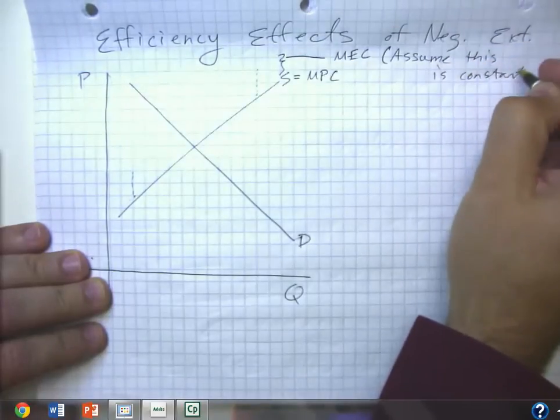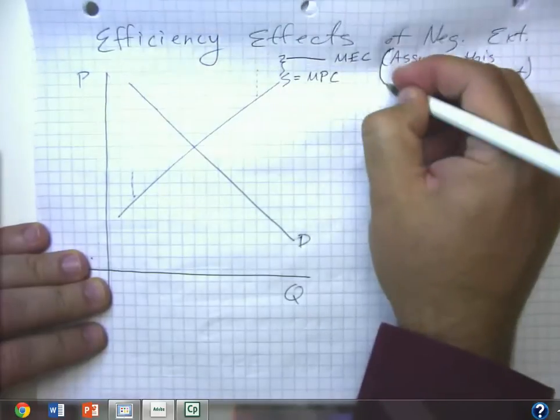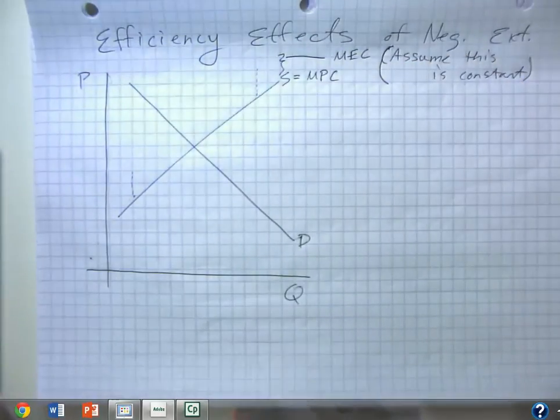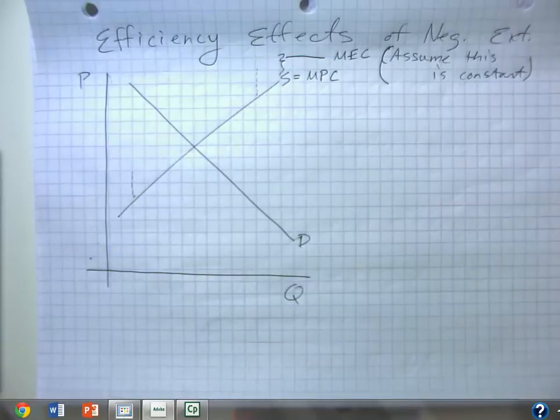So that the harm associated with pollution is the same for the first unit of pollution as it is with the hundredth unit of pollution. So each unit of pollution does equal harm.